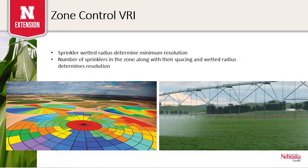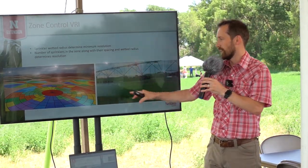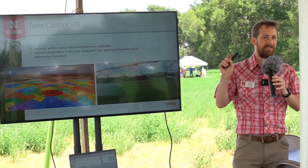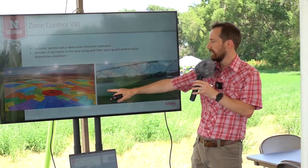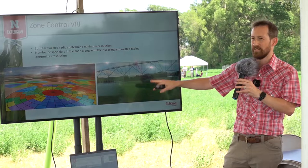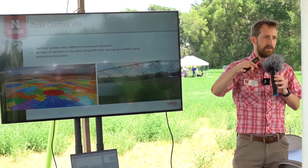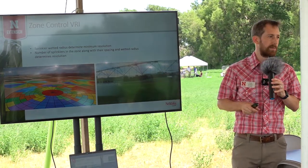The area of each zone is driven by the zone size and the wetted radius of the sprinklers. We can determine the resolution we're capable of achieving, but we want to make sure the machine is capable of matching the map's resolution. Sprinklers that are on and off will pulse — they'll come on and put water down in certain areas unless the prescription says to put no water in a specific spot. That's how the system controls the amount of water being applied.